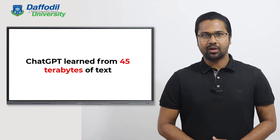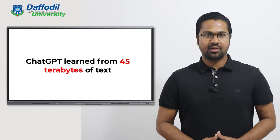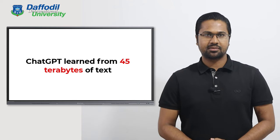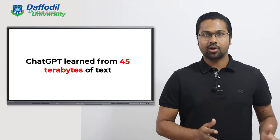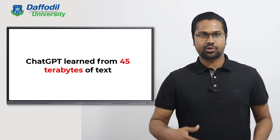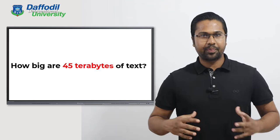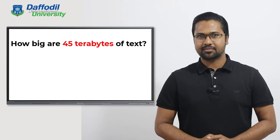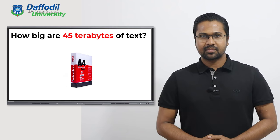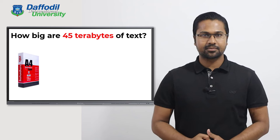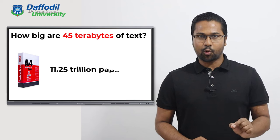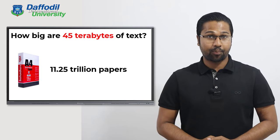ChatGPT learned from 45 terabytes of text including books, articles, websites, and digital content. It learned from technical books, poetry, fiction, newspapers, and any other content source you can think of. How big are 45 terabytes of text? You are familiar with A4-sized paper — the paper we use to print documents. 45 terabytes of text means 11.25 trillion A4 pages.